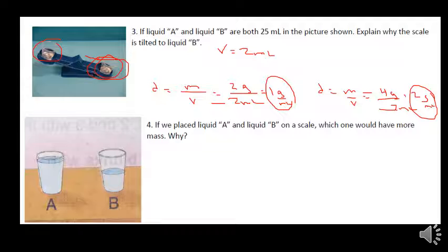If we place liquid A and B on a scale, which would have more mass and why? Well, if they were the same material, if these were both water, then obviously A would have more mass.